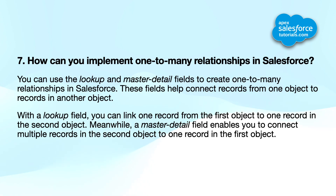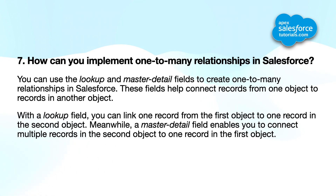Seventh question: how can you implement one-to-many relationships in Salesforce? You can use lookup and master-detail fields to create one-to-many relationships. With a lookup field, you can link one record from the first object to one record in the second object. A master-detail field enables you to connect multiple records in the second object to one record in the first object.